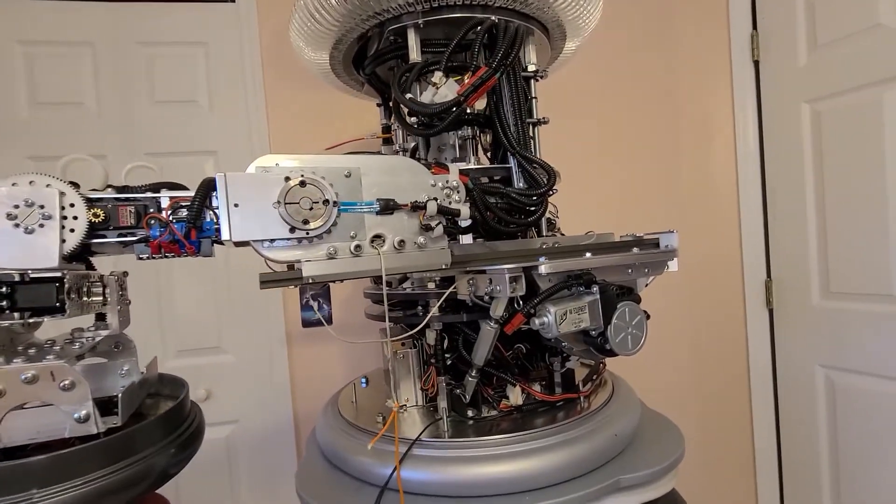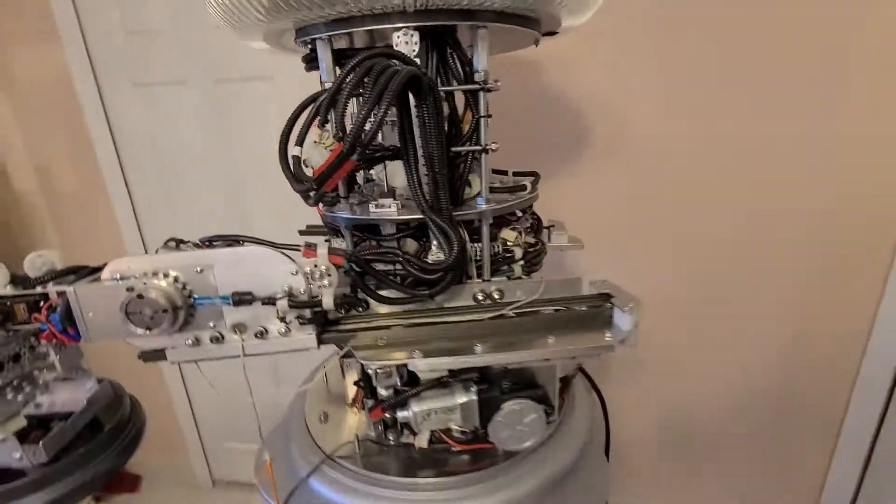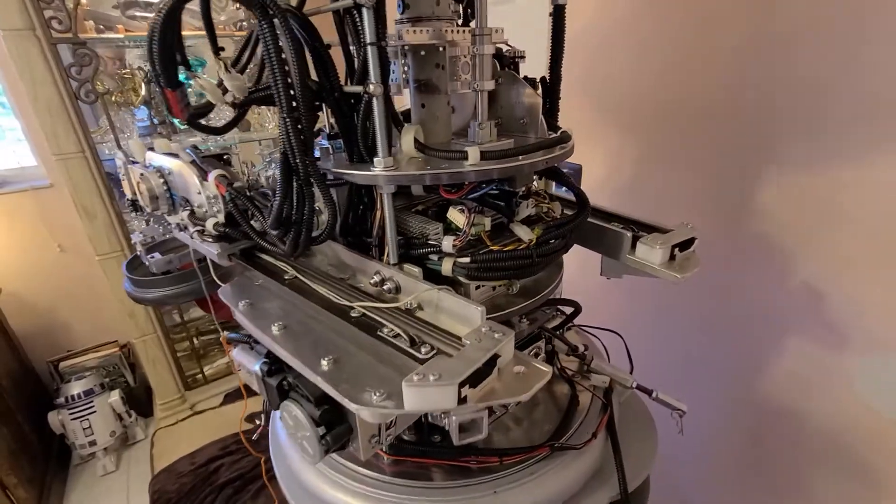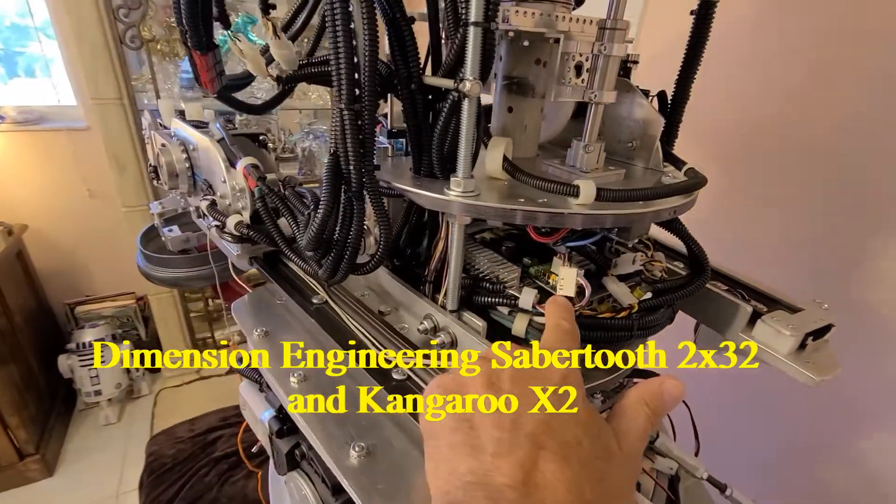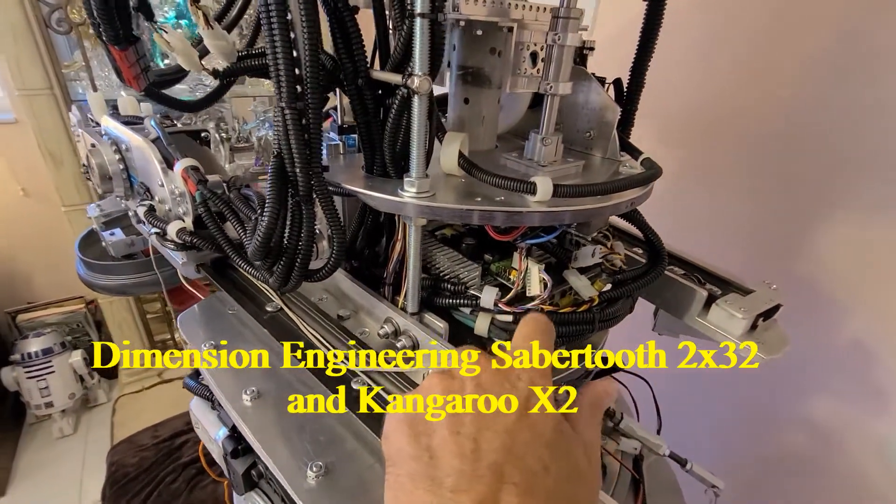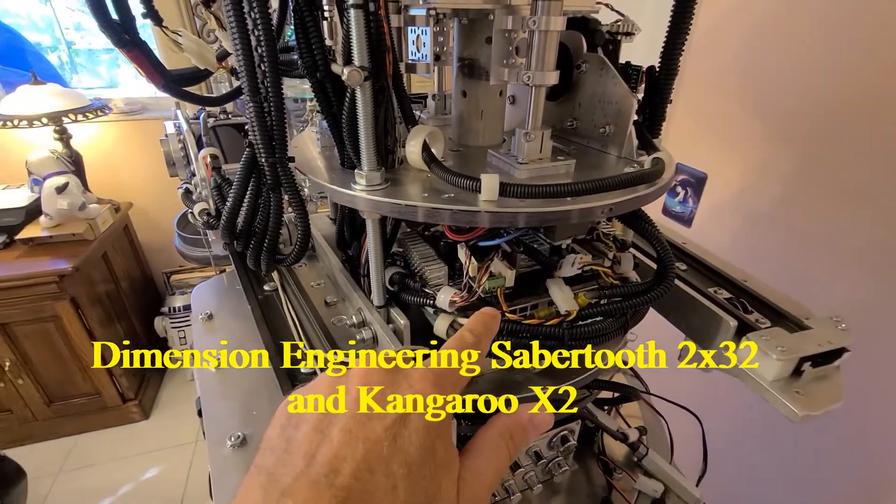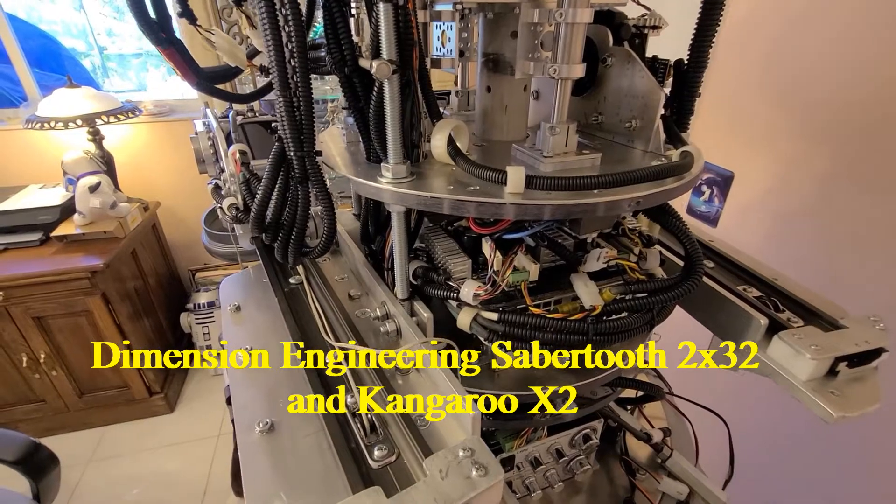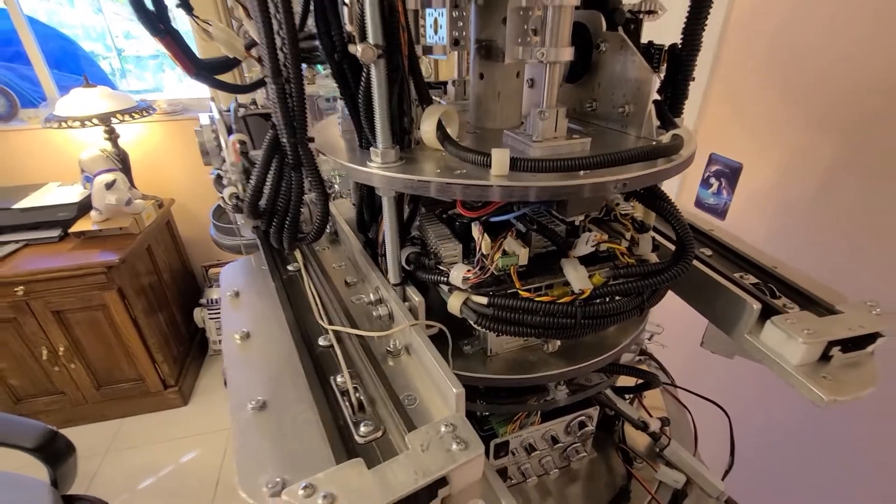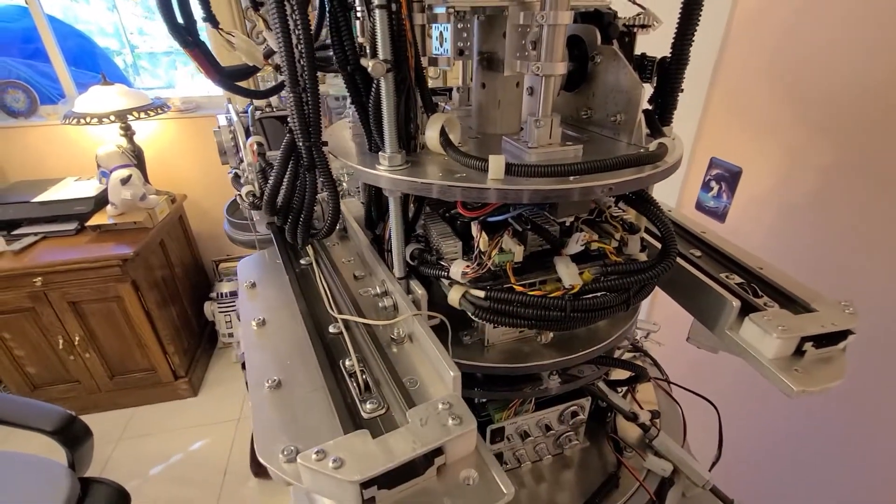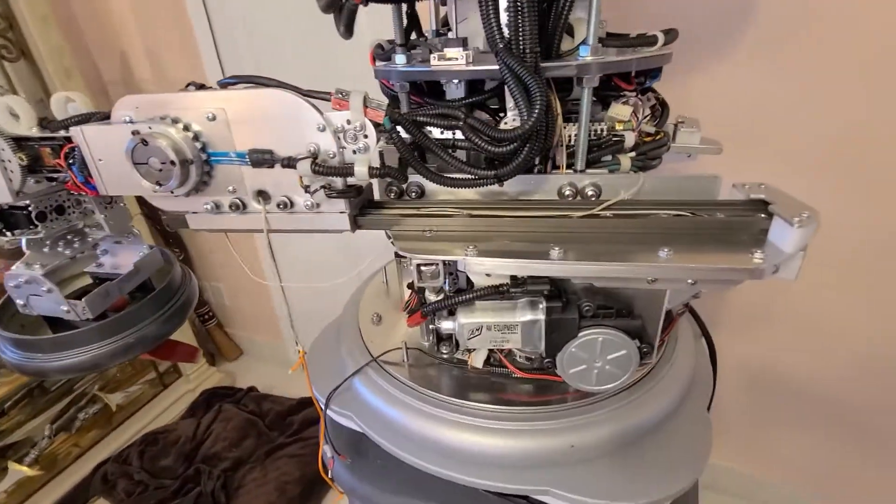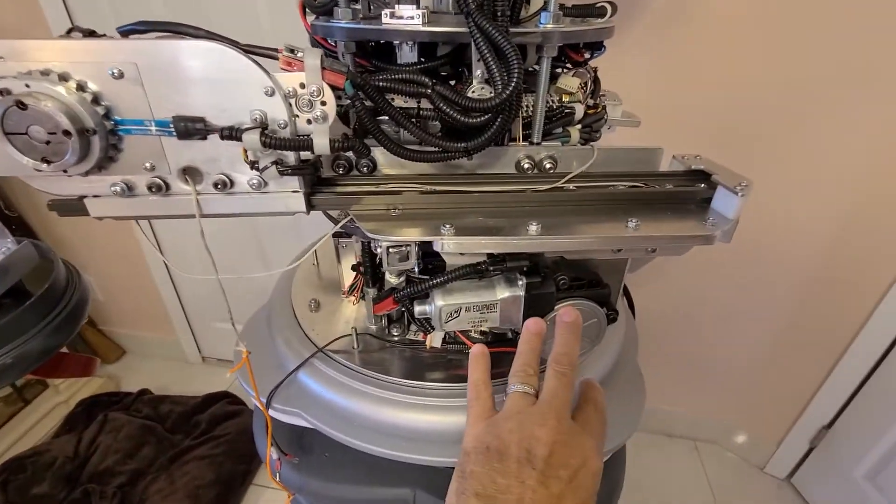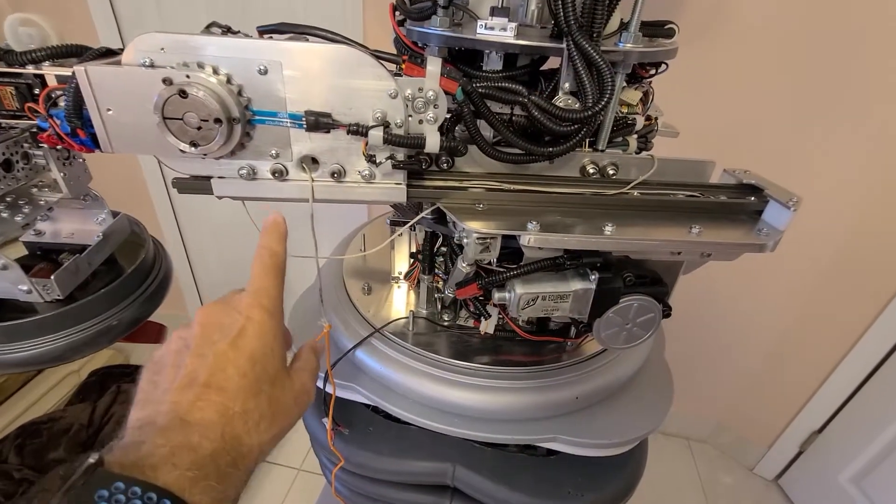Now, what I've done in the past and what I want to change is it's been controlled by a Sabertooth motor controller and a Kangaroo daughter board for position and speed. Well I'm not going to get rid of that, but what I've done in the past that I didn't like is the motor was being watched instead of the carriage.